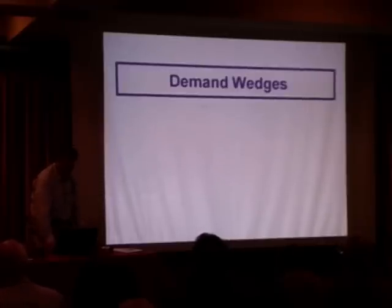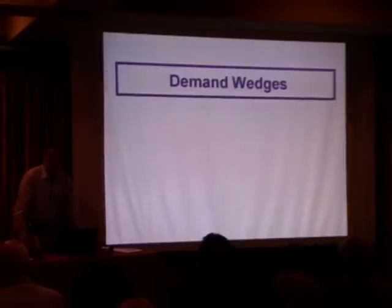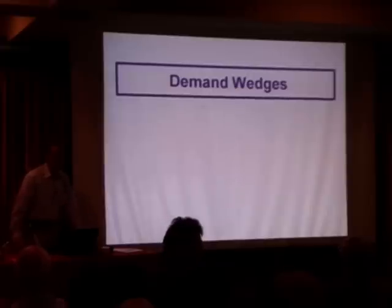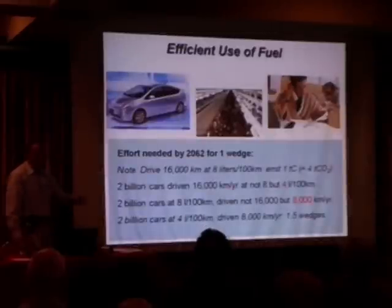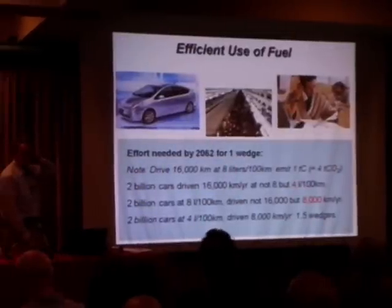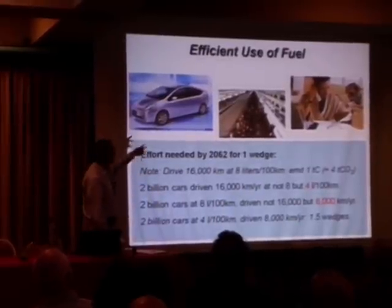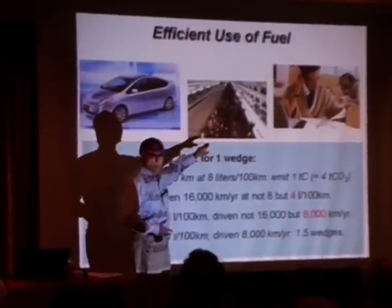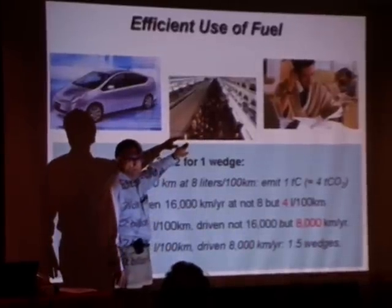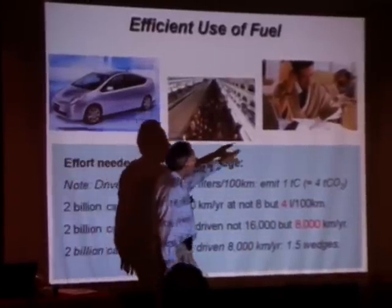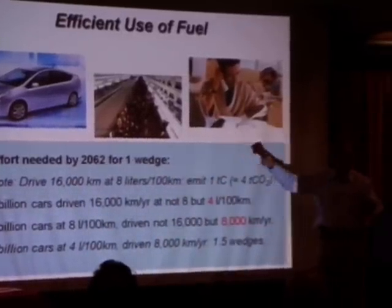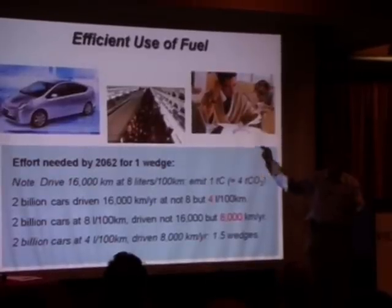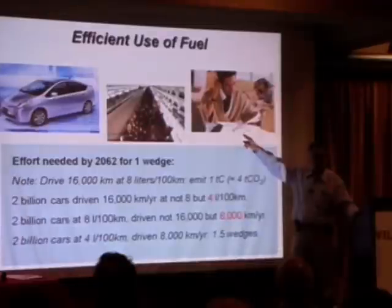I'm going to split the discussion into demand wedges and supply wedges. For efficient uses of fuel, here are three images: the Prius — an efficient car; public transport in a city redeveloped to reduce private transport demand; and someone working from home, where communication is substituting for transport. Information technology can substitute for transport — that's an important wedge I don't think is on your list, but it's really important.